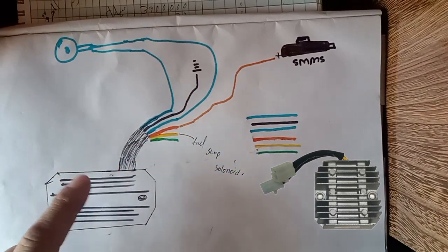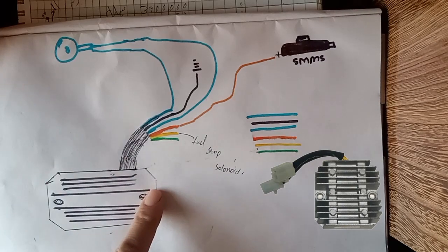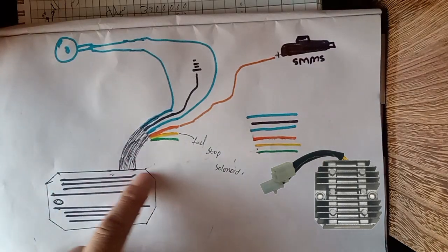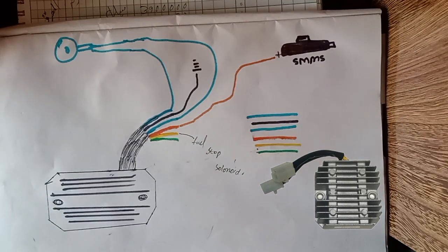The six-wire charging rectifier is mostly found in Perkins generators - 10 kVA, 13 kVA, and 15 kVA models. Before starting the video, a small request to all newcomers: if you're first time on my channel, please subscribe and hit the bell notification to get more updates.